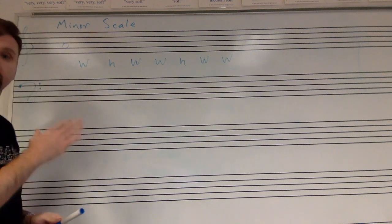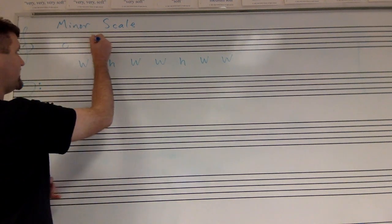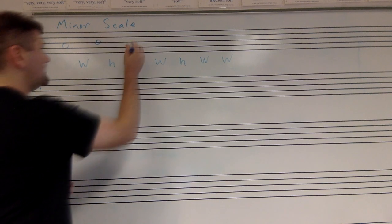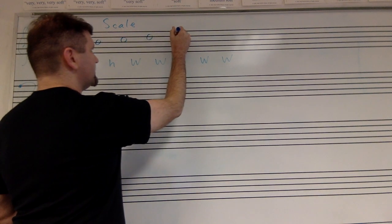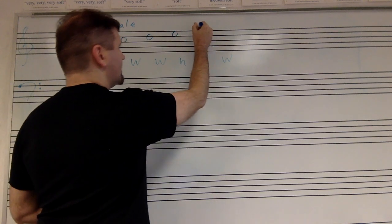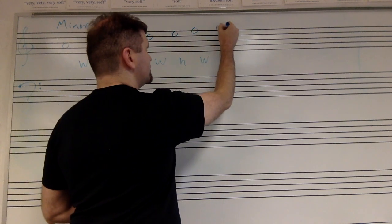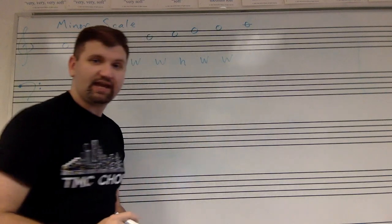Now if we were to start a minor scale on A, we would get A, B, C, D, E, F, G, and A.